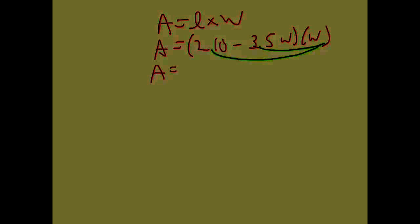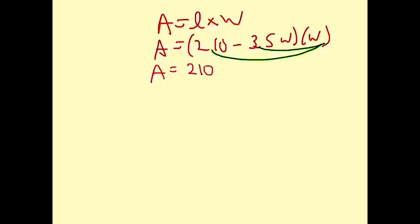So area is going to equal 210 times W and negative 3.5W times W. And I'll just rewrite that so that W squared is first.